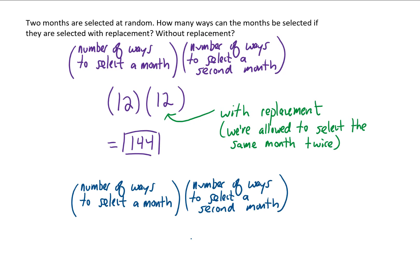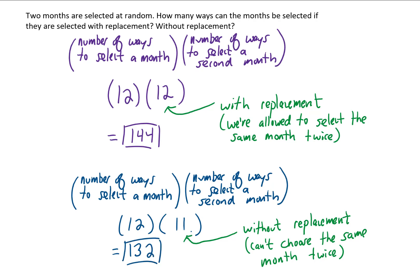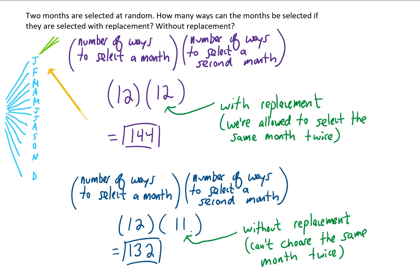Let's do the same problem without replacement. We still have 12 options for our first selection. But for our second selection, if we're doing this without replacement, that means we can't choose the same month twice, so we only have 11 months to choose from for our second month. Multiplying these two numbers together gives us 132 possible outcomes without replacement. If we wanted to draw a tree diagram for this problem, it would get pretty ugly pretty fast — 12 possible months for the first selection, and either 12 or 11 choices for each of those branches.